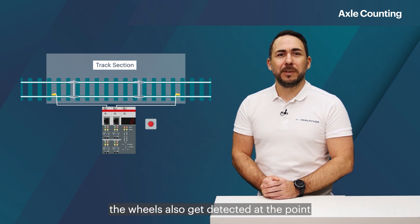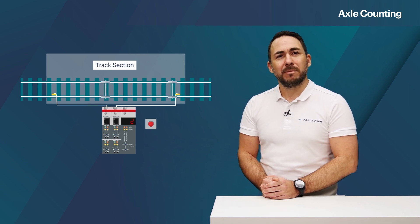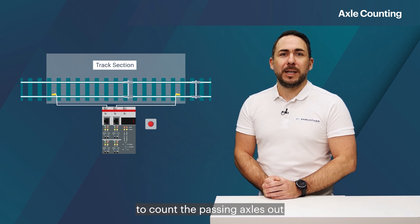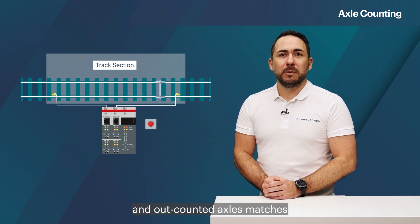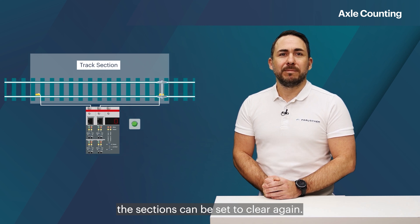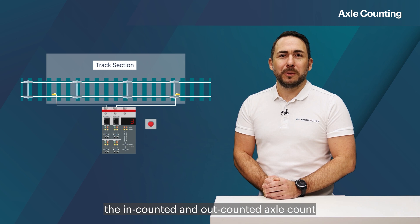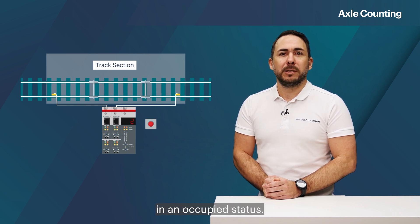As the train continues, the wheels also get detected at the point when they traverse the sensor located at the end of the section. With this information, the axle counting logic starts to count the passing axles out of the corresponding section. When the number of the in-counted and out-counted axles matches, the section can be set to clear again. In case a wagon gets lost, the in-counted and out-counted axle count would not match and therefore the section would remain in an occupied status.